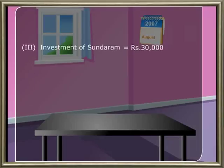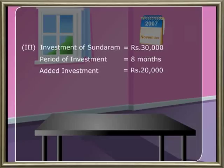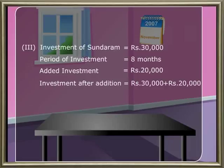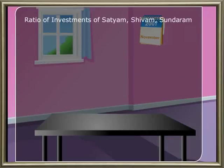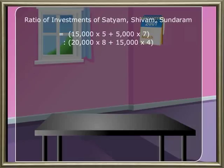Investment of Sundaram is rupees 30,000 for the first 8 months. He added rupees 20,000, so the investment after addition becomes rupees 50,000 for the remaining 4 months. Now the ratio of investments of Satyam, Shivam, and Sundaram is calculated as: 15,000 into 5 plus 5,000 into 7, is to 20,000 into 8 plus 15,000 into 4, is to 30,000 into 8 plus 50,000 into 4.